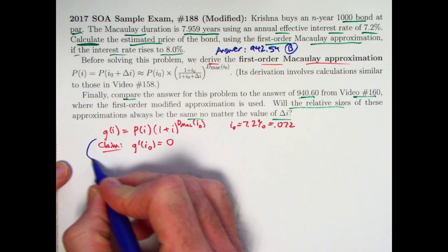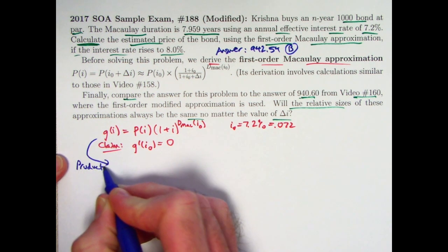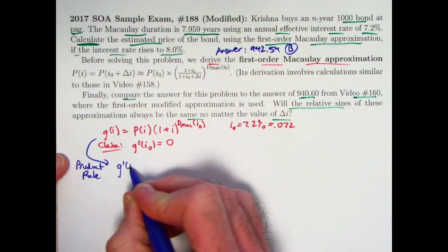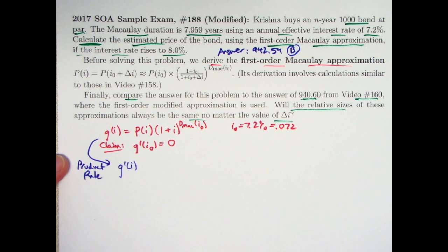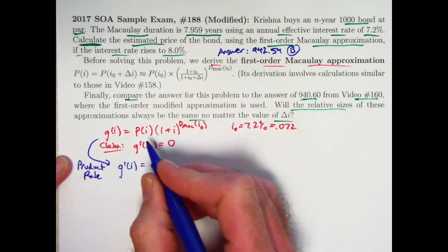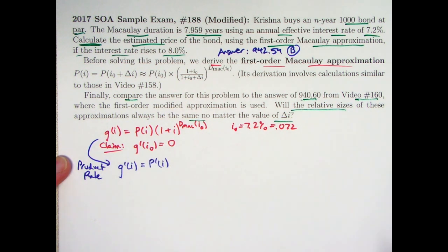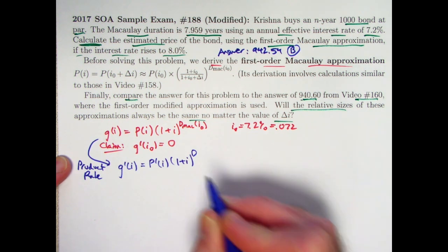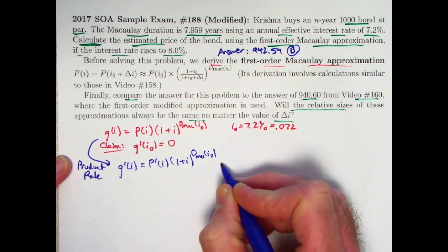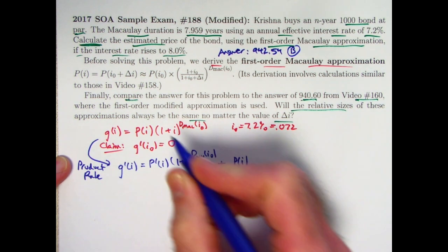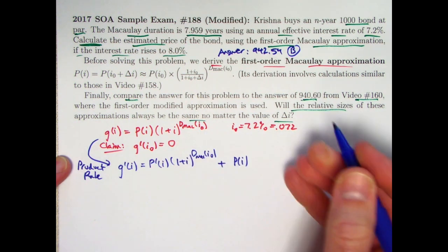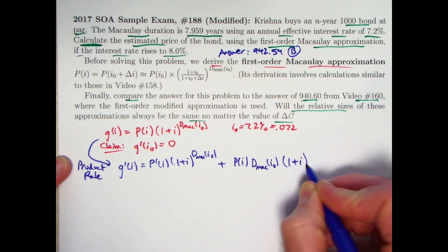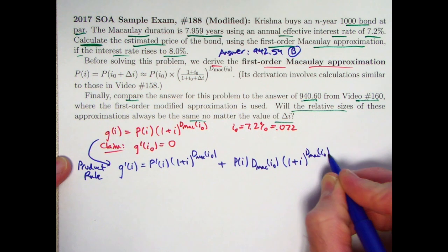We're going to use the product rule for derivatives because g(i) is the product of two functions of i. Differentiating with respect to i to find g'(i): I take the derivative of the first function, p'(i), times the second function (1+i) raised to the fixed power d_MAC(i₀); then add the first function p(i) times the derivative of the second function — bringing the fixed exponent d_MAC(i₀) down in front, giving d_MAC(i₀) times (1+i) to the power d_MAC(i₀) minus one. The chain rule gives derivative of (1+i) as one, so we don't need to write it.